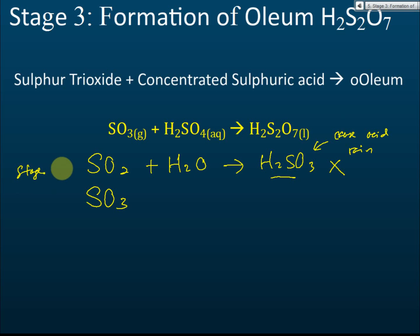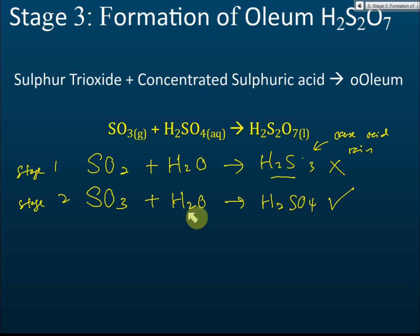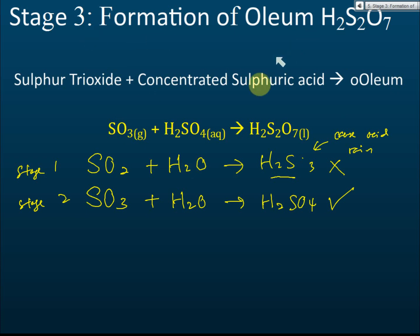In stage two you get sulfur trioxide. If you dissolve sulfur trioxide in water, you get sulfuric acid, H₂SO₄. That is what we want. So in stage three, you can just add water to sulfur trioxide gas to get sulfuric acid.